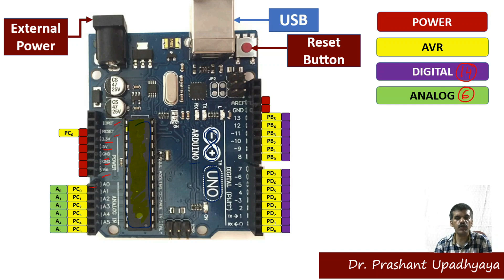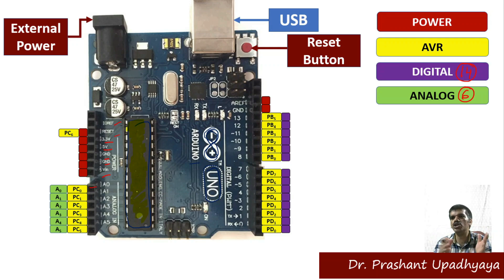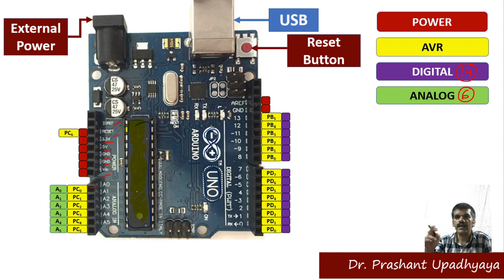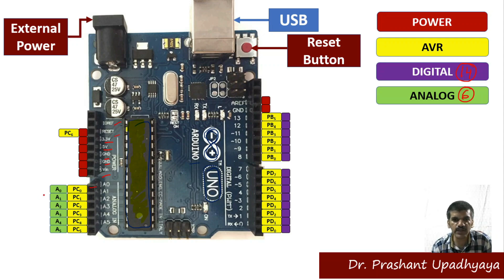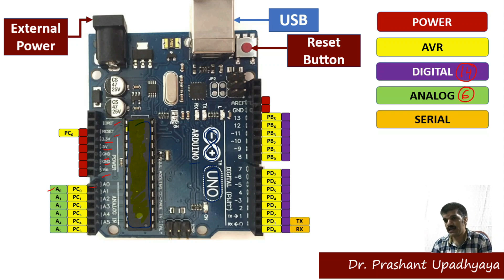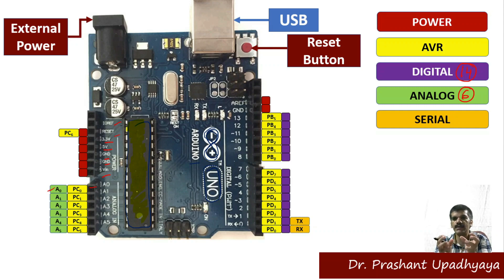If I want to turn a LED either on or off — that is, work with a digital signal (0 or 1, low or high) — I use the digital pins. If I want to vary the voltage to the LED, meaning work with different voltage levels, I use the analog pins. So we have 14 digital pins and 6 analog pins.